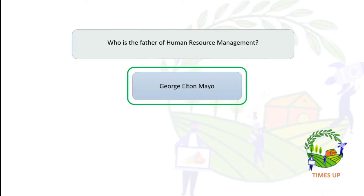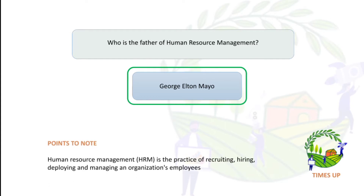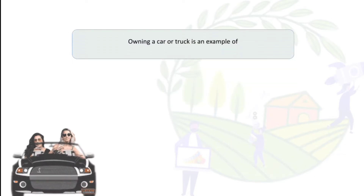Who is the father of human resource management? The answer is George Elton Mayo. Human resource management is a practice of recruiting, hiring, deploying, and managing an organization's employees. In short, it is called HR.